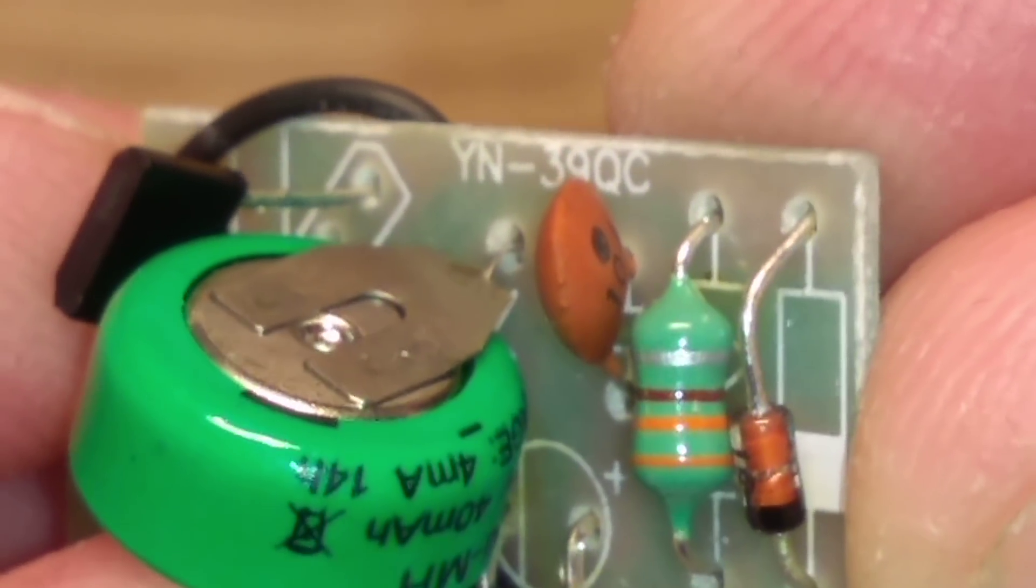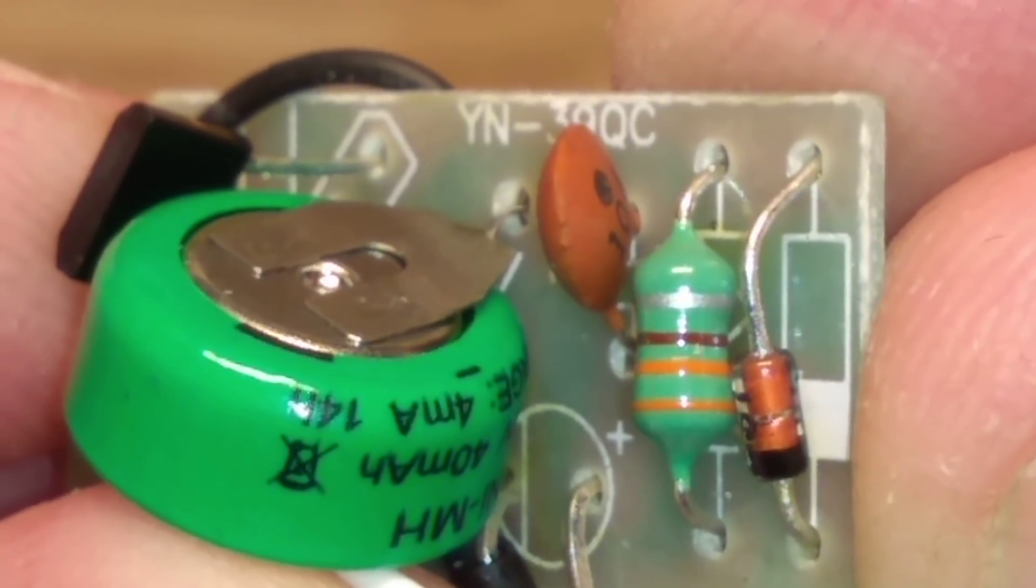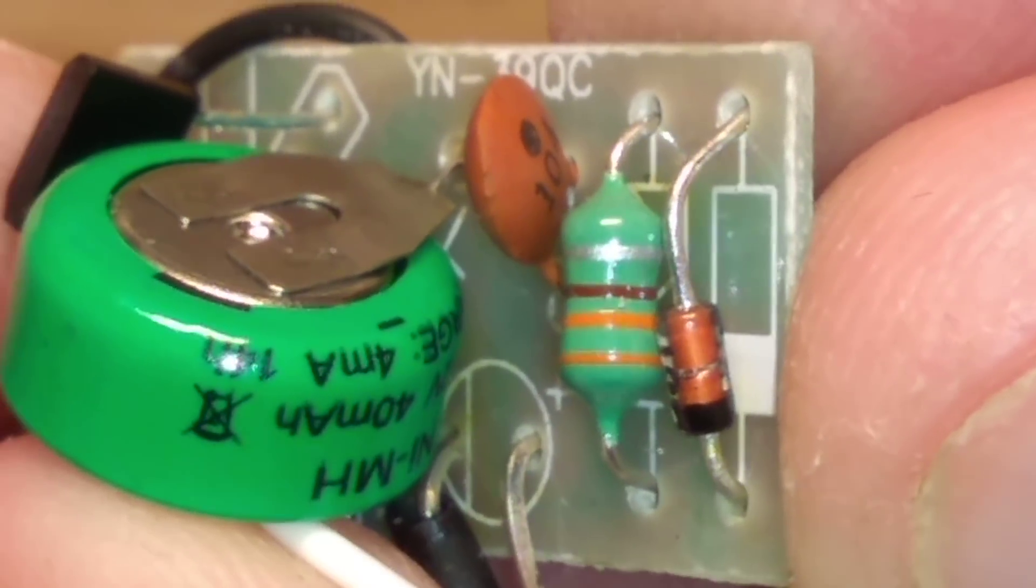It's got an inductor in it. Orange, orange, brown, silver. That means 331, 330 microhenries.